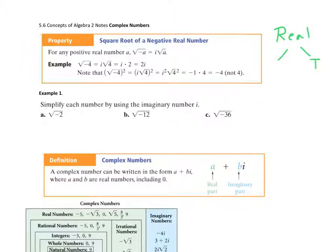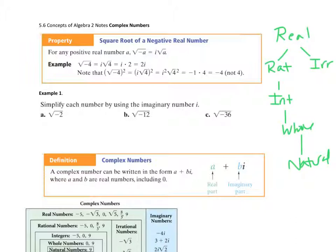You can either have irrational numbers or rational numbers, and then you can have integers, and you can have whole numbers, and these are natural numbers. So every natural number is a whole number, every whole number is an integer, every integer is rational, every rational number is real. And the next step up here is every real number is called a complex number. Complex numbers can be real or they can be imaginary.